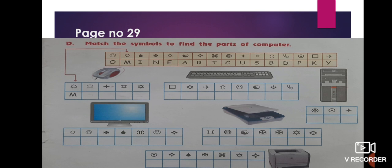Complete the remaining answers: Mouse, Keyboard, CPU, Monitor. Next is a fun activity — match the symbols to find the parts of the computer. There are some parts and you have to match the symbols to find out which part they represent. The first one has been done for you.